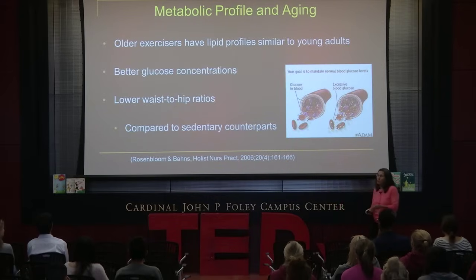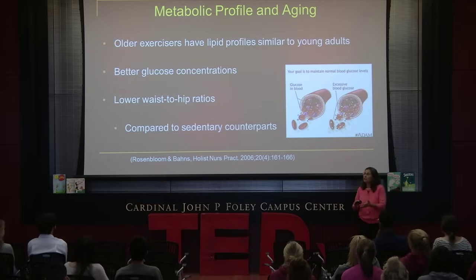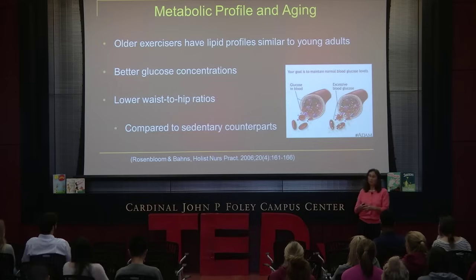So, some of the things that changed too with older exercisers, they typically had the same type of profile as younger counterparts, as people in their 20s and 30s. And when I say older, that can be defined very differently, but from about the age of 40 on. And also blood sugar or blood glucose levels can be better maintained when people exercise and eat well. And things like your lipid profile, your total cholesterol in your blood, your good cholesterol in your blood, those are better in folks who exercise versus those who don't.